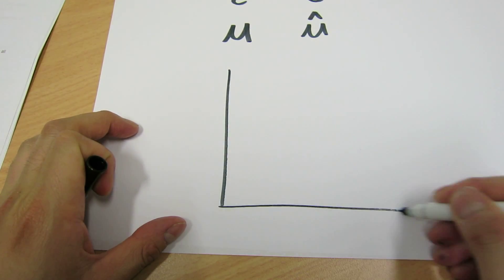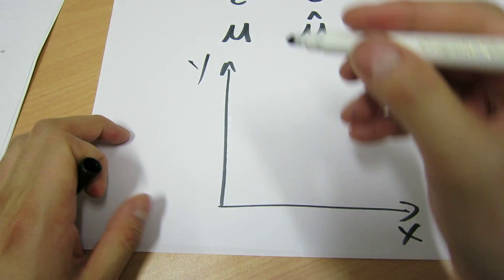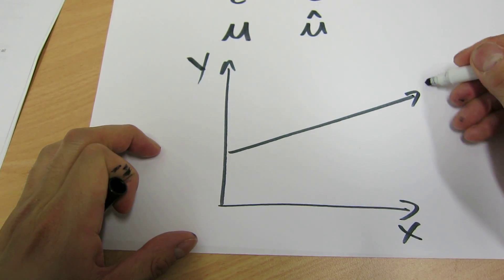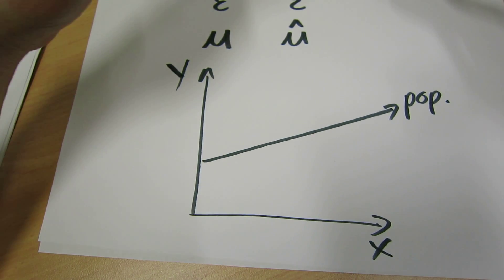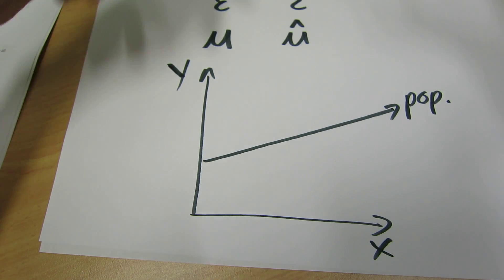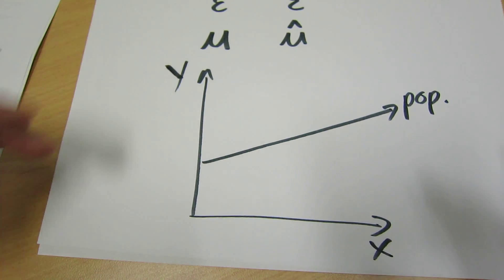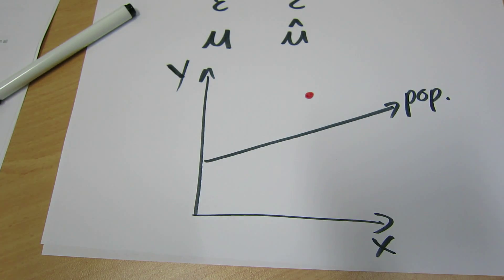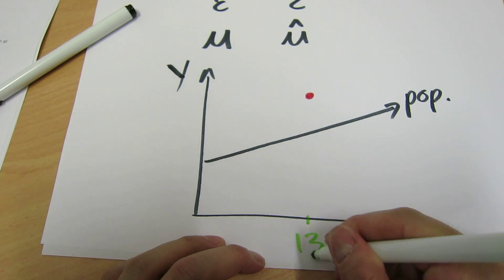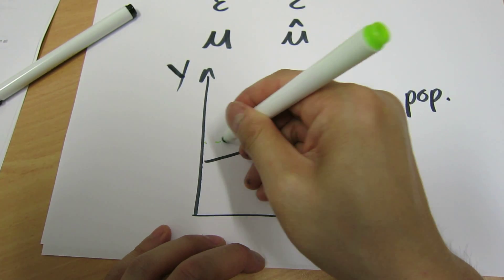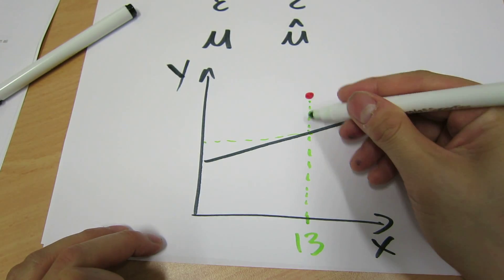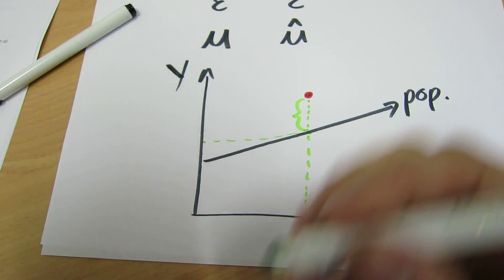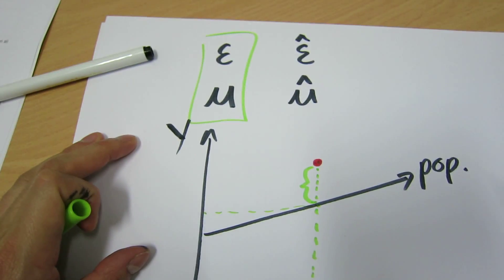The easiest way to show this is to draw the regression line. Remember, the regression line is a line of best fit. Imagine we have all these observations and we draw the line of best fit — this is the population regression line, where we assume we observe every single observation in the universe. Now suppose there's an observation that lies up here. Given this particular x value, let's say x equals 13, our model predicts a certain value. The actual difference between what the model predicts and the actual observation is our error term.